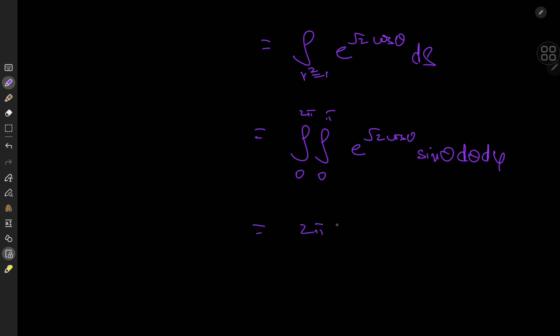Then we're left with integral 0 to pi, e to the root 2 cosine theta, sine theta, terribly sorry about that, d theta, which is awesome because the derivative of cosine is negative sine.